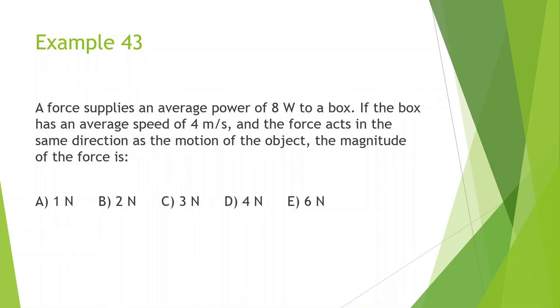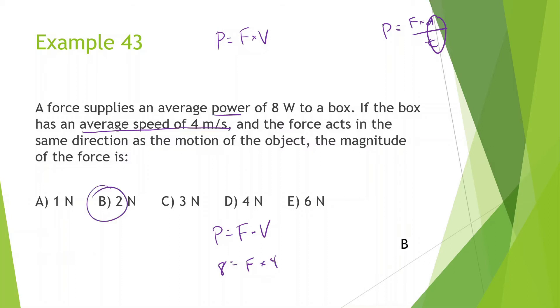Let's look at example 43. A force applies an average power of 8 watts to a box. If the box has an average speed of 4 m/s and the force acts in the same direction as the motion of the box, the magnitude of the force is... Whenever you see average speed and you see power, you should be thinking about the formula power is equal to force times velocity. Remember, this derives from power, which is equal to work, force times distance, divided by time, and this d over t changes to v. So we know power is equal to force times velocity. Power is equal to 8, force is what we're looking for, velocity is 4, meaning that the force should be 2.